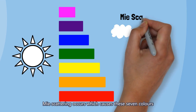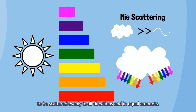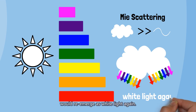Mie scattering occurs, which causes these seven colors to be scattered evenly in all directions and in equal amounts. This means that the incoming white light that enters the cloud would re-emerge as white light again.